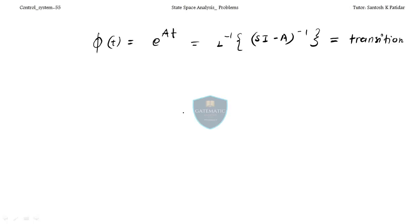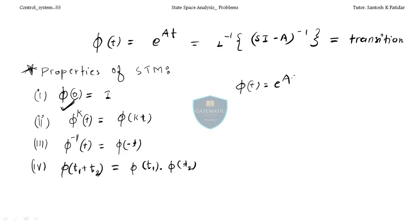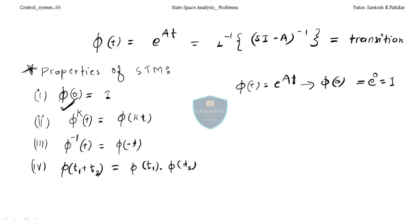We will now see the properties of the state transition matrix (STM). The first property: φ(0) = I, the identity matrix. Because φ(t) = e^(At), putting t = 0 gives e⁰ = 1, which is the identity. Second property: φ(t)^k = φ(kt). We are powering e^(At) to the k, giving e^(Akt), which is φ(kt). Proved.